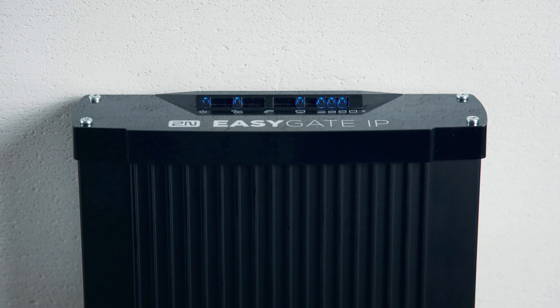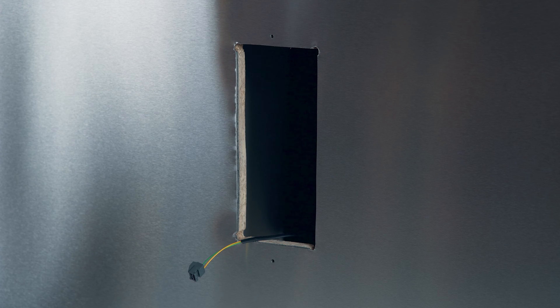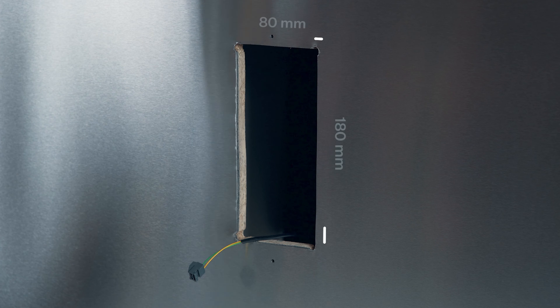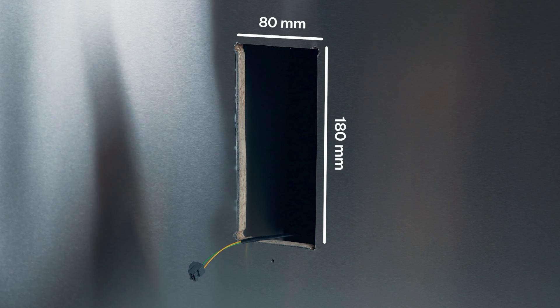The FXS line will light up when a call is established. Let's move to the elevator cabin and install the 2N Lift 1. You need a hole in the cabin that's approximately 80 millimeters wide and 180 millimeters high.